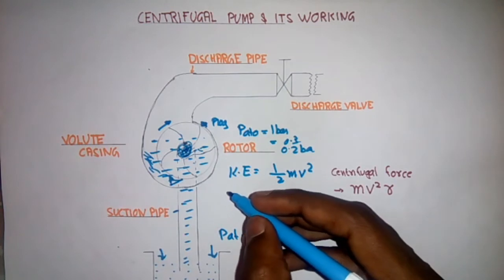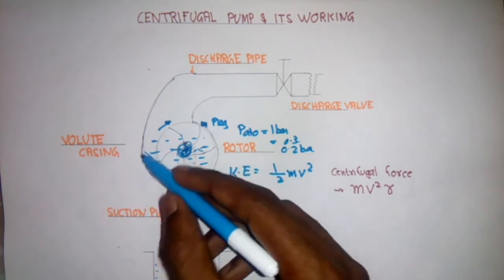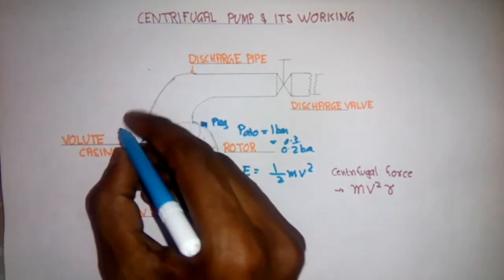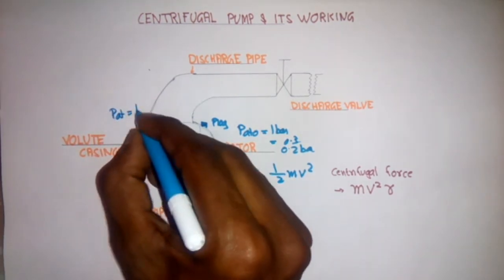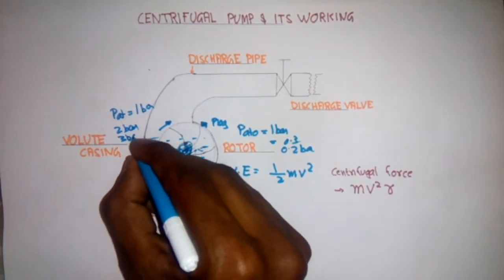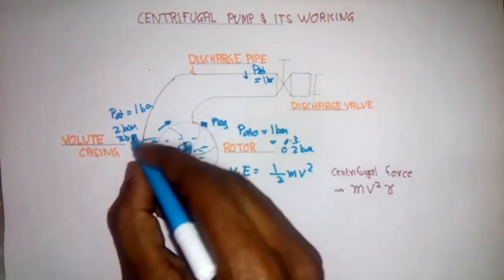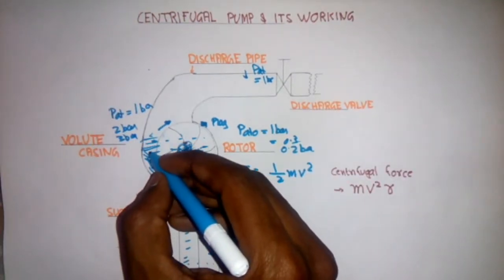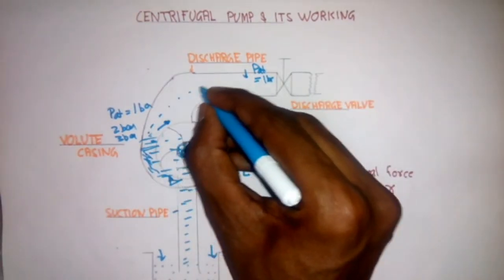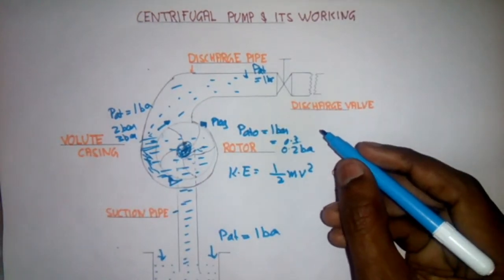Now the volute casing comes into action. What it will do? It will reduce the velocity of the liquid and increase its pressure. The volute casing increases its pressure. Before, the pressure is atmospheric pressure that is 1 bar. And now it is increasing to 2 bar, 3 bar. And here at the discharge side the pressure is atmospheric pressure that is 1 bar. Now the pressure increased by the volute casing is more than the pressure at the discharge side. So the water starts moving towards the discharge. This is the working of centrifugal pump.